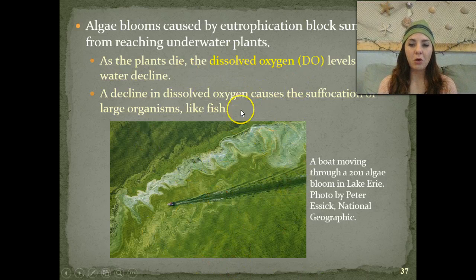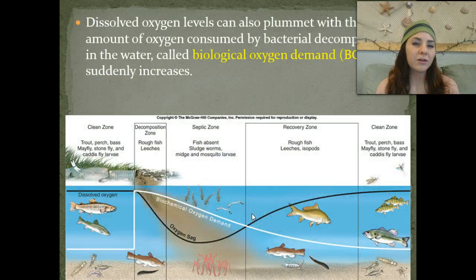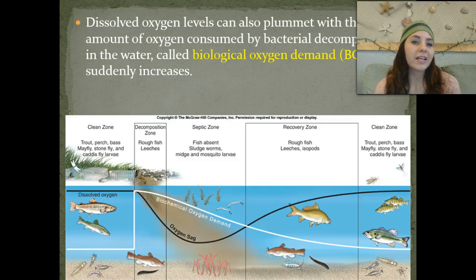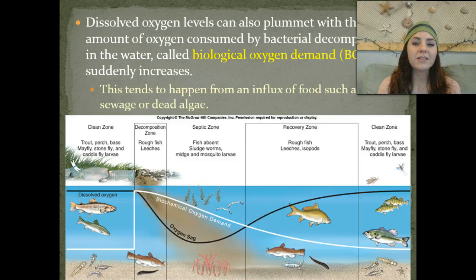This is a photo of a boat moving through a 2011 algal bloom in Lake Erie. Dissolved oxygen levels can also plummet with the amount of oxygen consumed by bacterial decomposers in the water, or when those suddenly increase—that's called the biological oxygen demand, or BOD. This tends to happen from an influx of food such as raw sewage or dead algae.